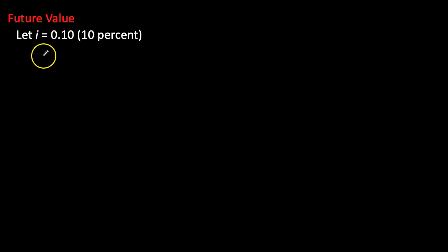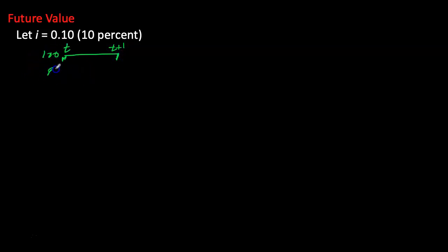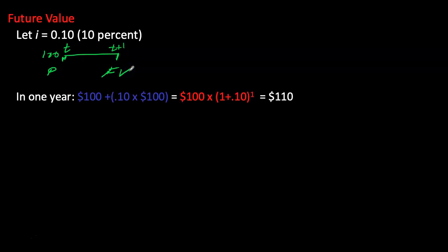Let's look at the concept of future value with a simple example: a principal amount of $100 that I want to save for one year. P is our principal and future value is denoted as F or FV. If I save $100 today at a simple interest rate of 10%, after one year I will end up with $110.